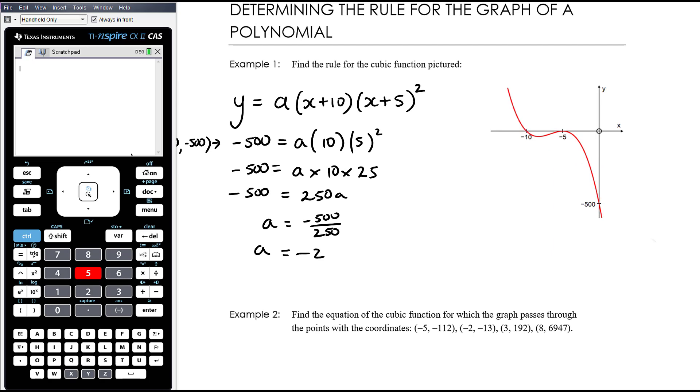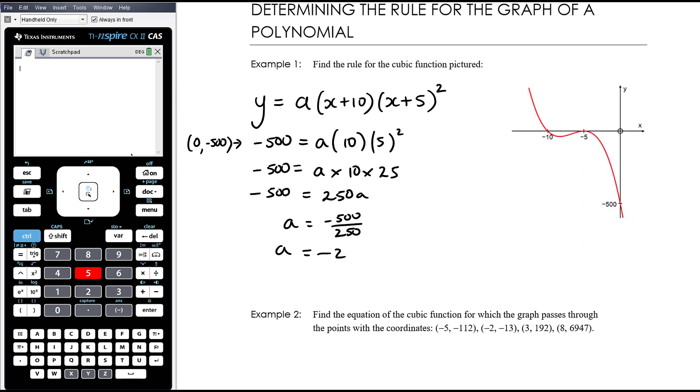So we expected a to be negative. We thought about that from the beginning. But I just call it a. And then I know that when I calculate it, it should give me a negative value. So my equation is y equals negative 2 times x plus 10 times x plus 5 squared.